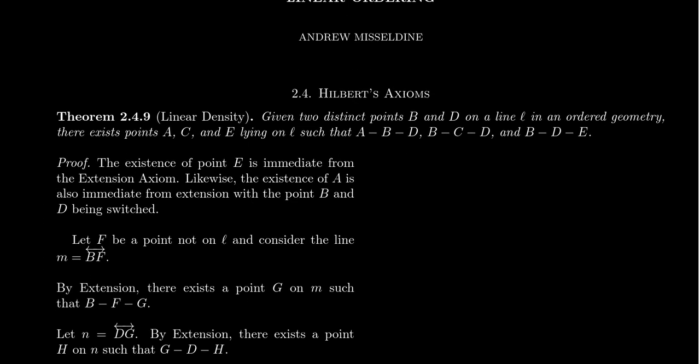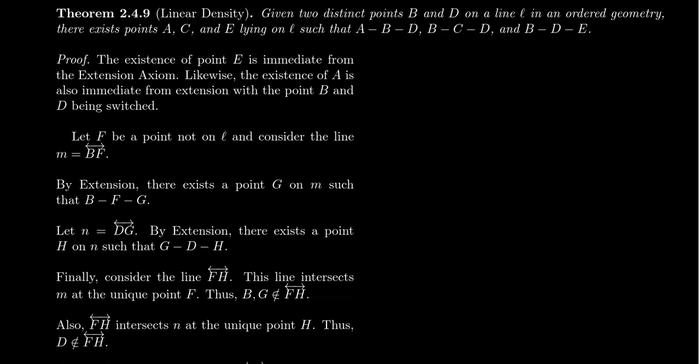Let me try to draw an illustration to show what we're thinking of right here. We have our line L, we have some points B and D. So, the linear density theorem tells us we can always have a point A, so that B is between A and D. We always have a point E, so that D is between B and E. And we always will have a point C, such that C is between B and D.